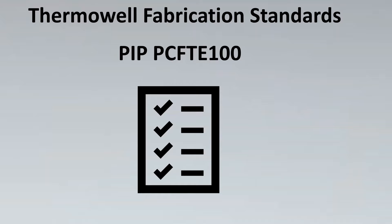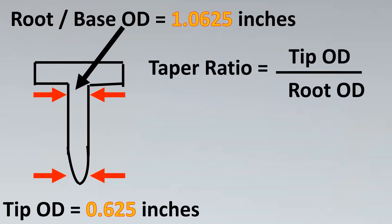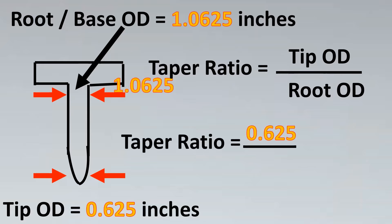Now, let's see if I manufacture a thermowell as per this standard, which I mean is PIP standard, will it follow the ASME standard? Let's have a look at that now. So here's my thermowell and as per PIP standards, the root or the base OD has to be 1.0625 inches. And the tip OD has to be 0.625 inches. So let's take a ratio of them. So as we said, it's tip OD by root OD. The taper ratio is going to be 0.625 and 1.0625.